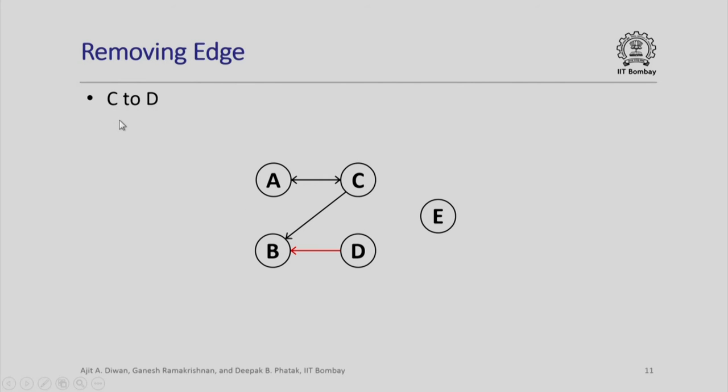Similarly, removing an edge from C to D will remove this particular edge. Notice again that what we are showing here is a graphical representation of the graph, a pictorial representation of the graph, but what we have to actually do is to remove the internal representation of the corresponding edges.